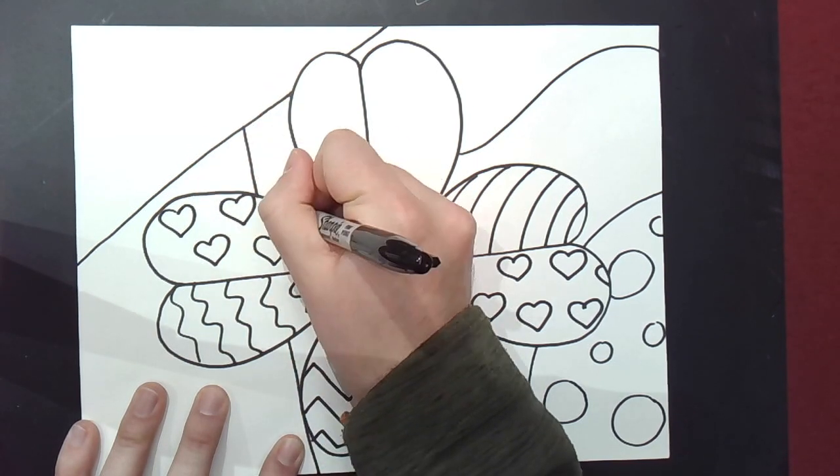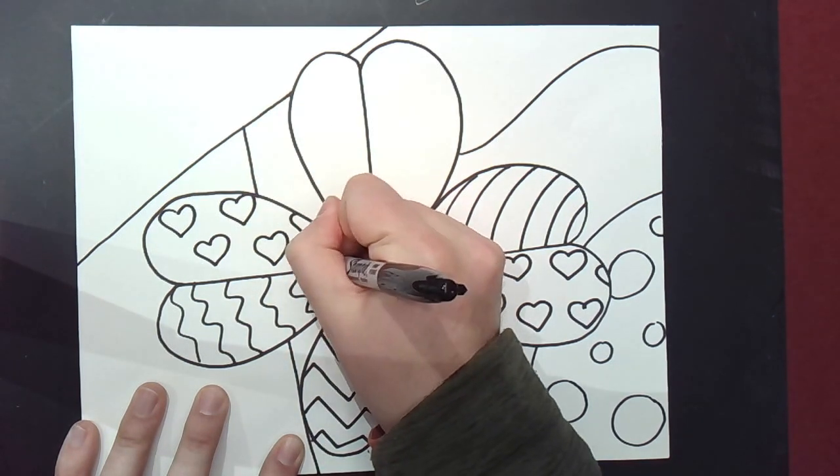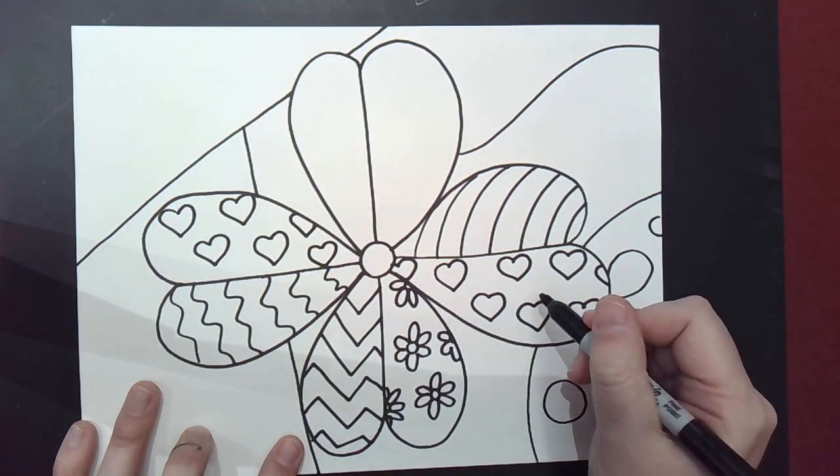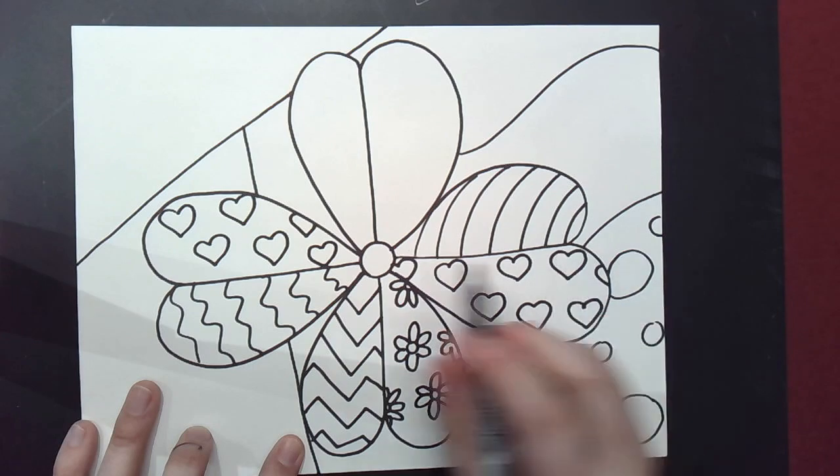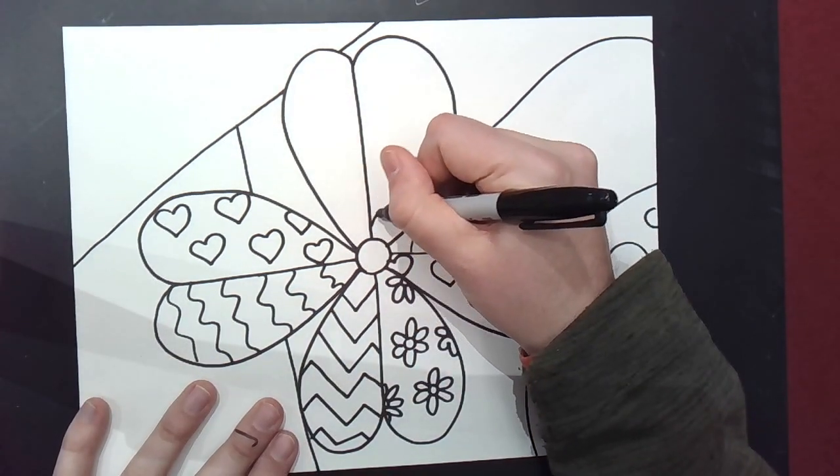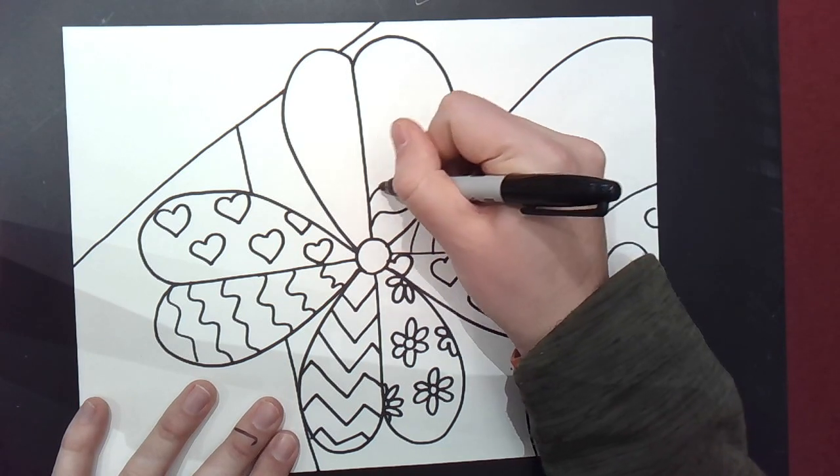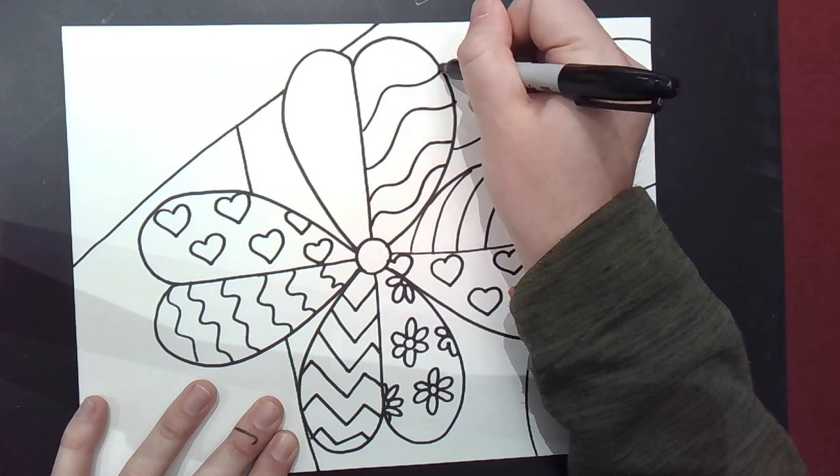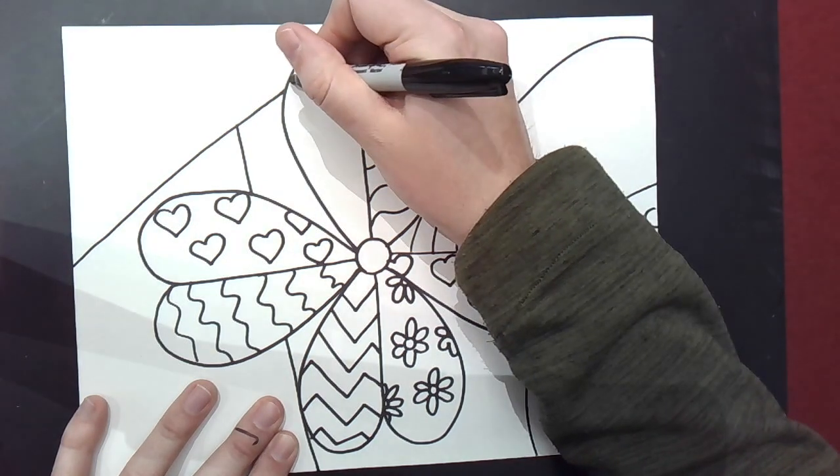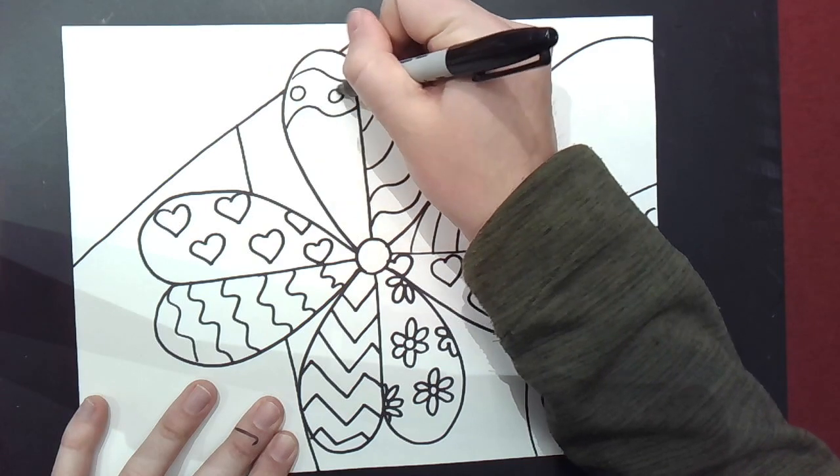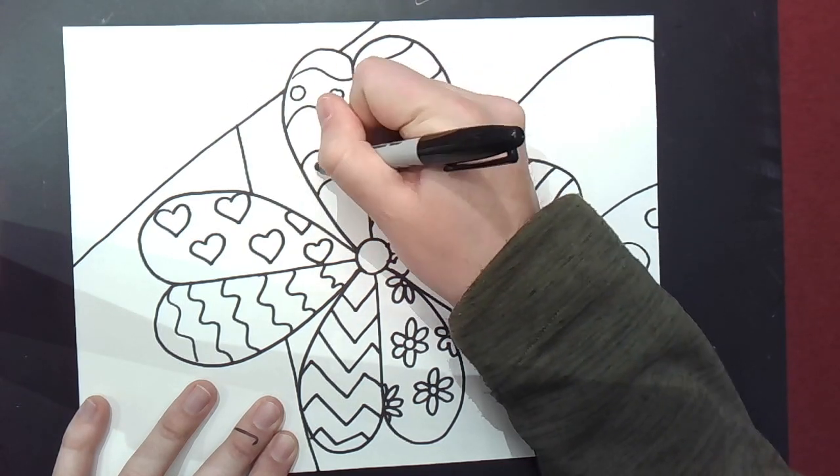And it's okay to reuse patterns. But when I color them, this heart pattern is going to be different from this heart pattern. Maybe this will be yellow background and pink hearts. Maybe this will be blue background and green hearts. Whatever. You want to make this as different as possible. But if you have to reuse shapes or patterns, I think that's okay. I'm just going to finish adding in different patterns here. And I will see you guys in a minute.